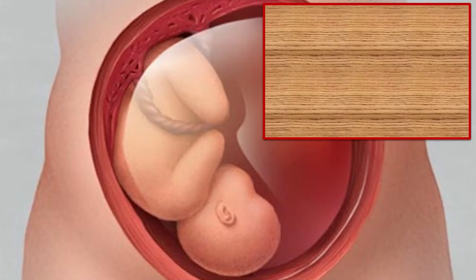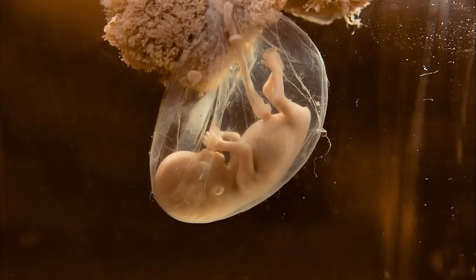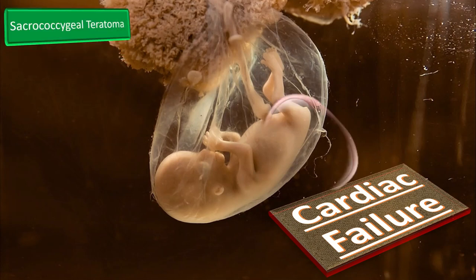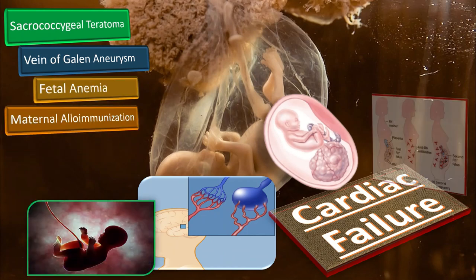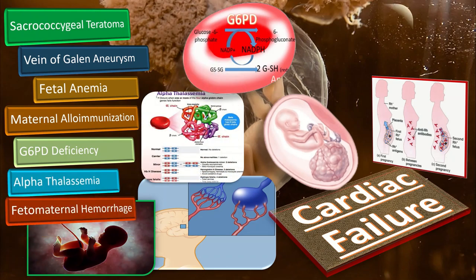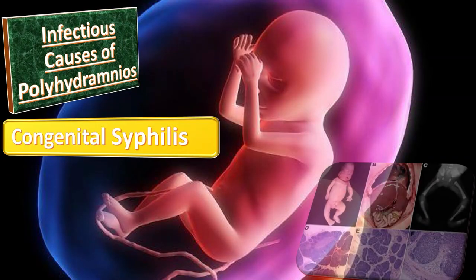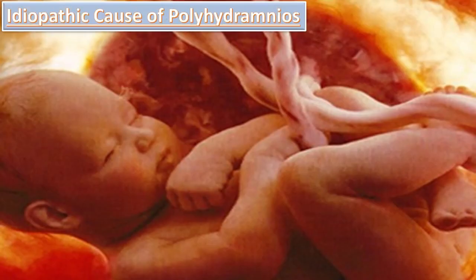The genetic causes include chromosomal anomalies like trisomy 13, 18, and 21, as well as non-immune hydrops. Cardiac failure can also cause polyhydramnios; conditions causing cardiac failure include sacrococcygeal teratoma, vein of Galen aneurysm, fetal anemia, maternal alloimmunization, G6PD deficiency, alpha thalassemia, and fetomaternal hemorrhage. Infectious causes include congenital syphilis and viral hepatitis. Finally, idiopathic cases occur when no other cause is identified.